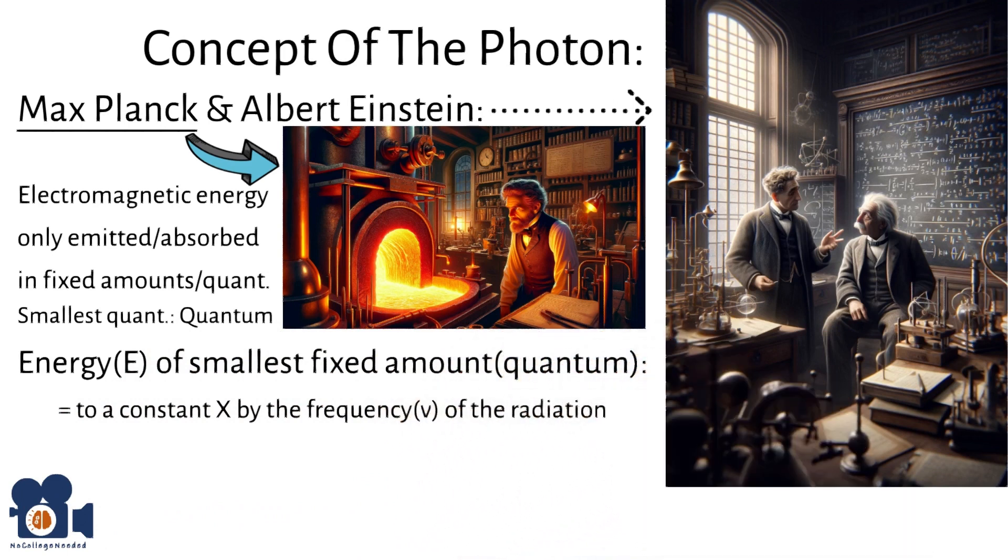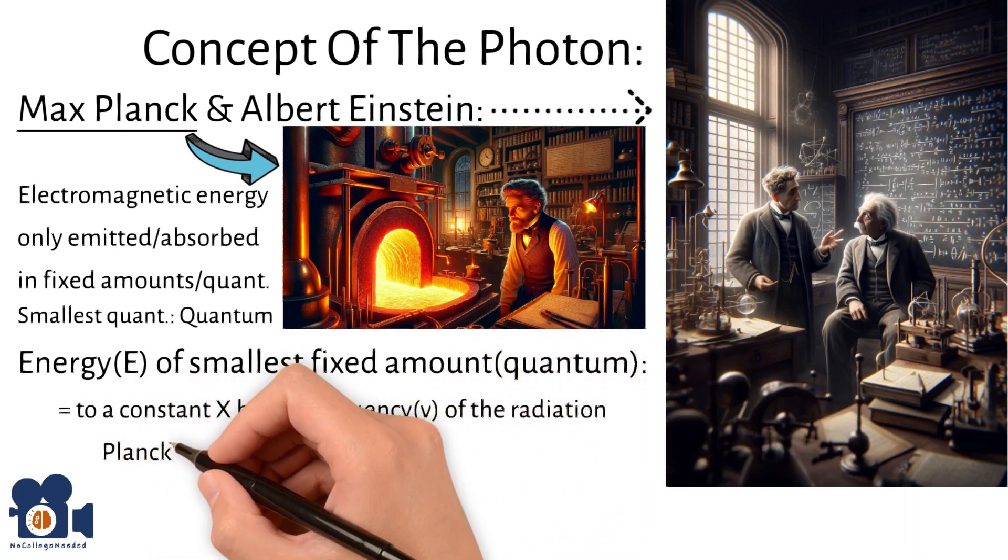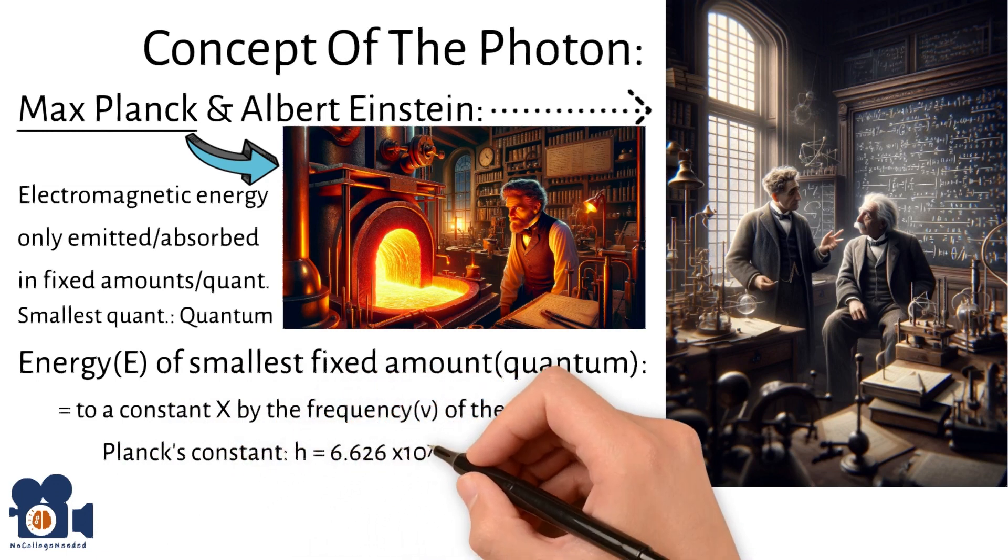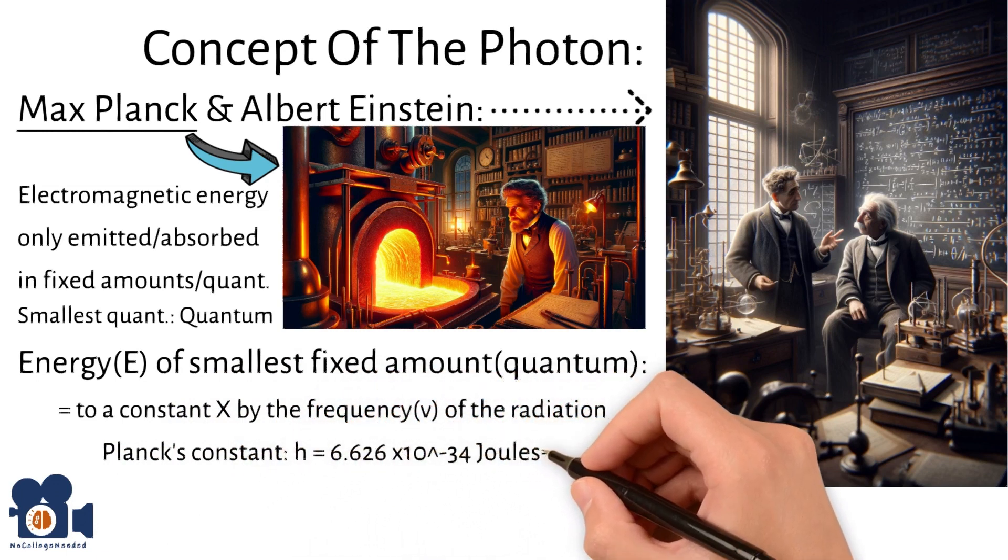That is where we get Planck's constant, which is h equals 6.626 times 10 to the negative 34th joule seconds.